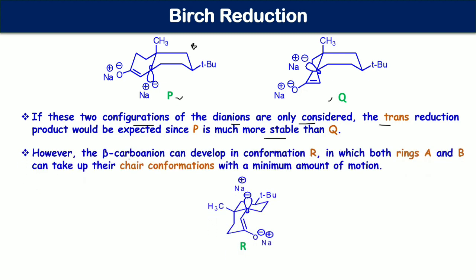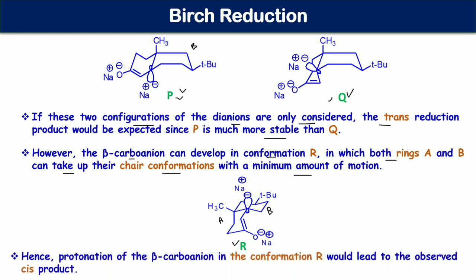The beta carbanion can develop in conformation R, in which both ring A and ring B can take up their chair conformations with a minimum amount of motion. The energy of the protonation transition state involving conformation R will be much lower compared to either P or Q. Therefore, protonation of the beta carbanion in conformation R leads to the observed cis product instead of the trans product.